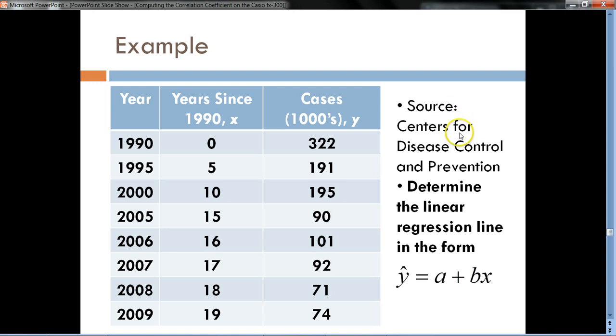This information comes from the Centers for Disease Control, and we want to determine the linear regression line in the form a plus bx. Now, one thing to think about before we go any further here is I know you're used to, in an algebra class, doing y equals mx plus b, where m is the slope of a line and b is the y-intercept. We do things a little bit differently in statistics.